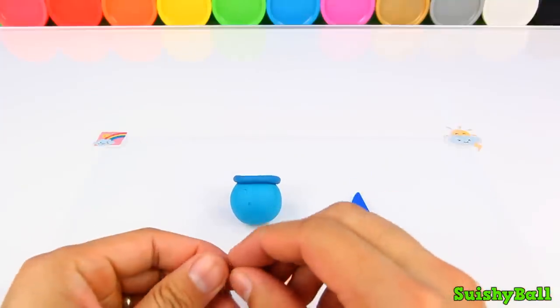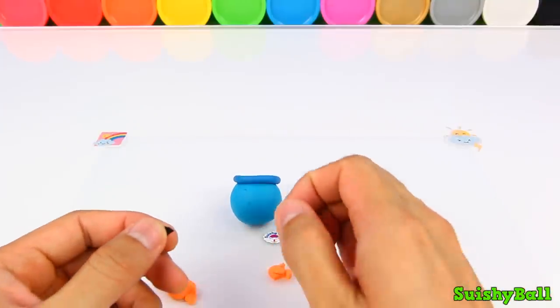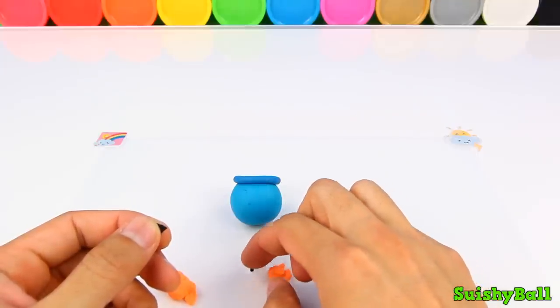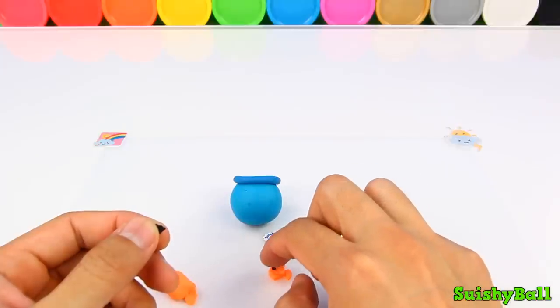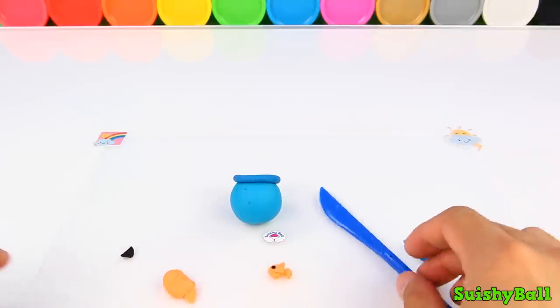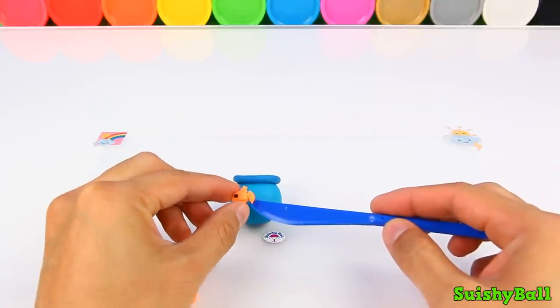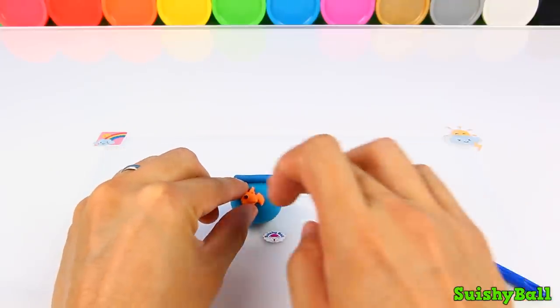I'm going to use some of this black play-doh to make a little eye. Okay, that's finished. And that fish is just going to go right there.